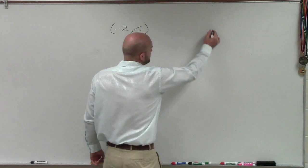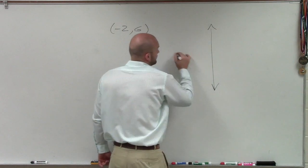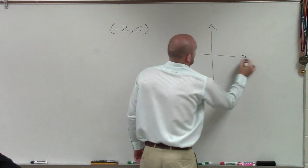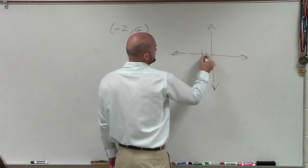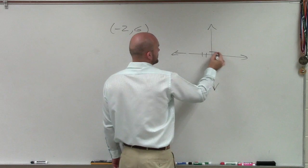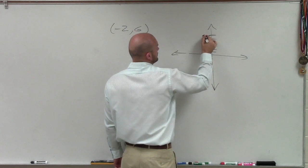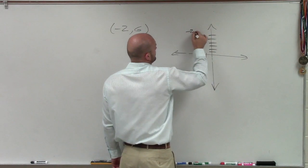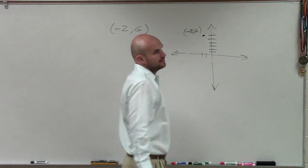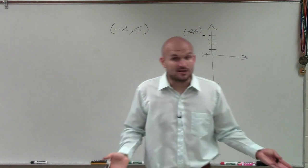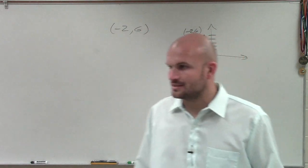So let's go and plot this point. Negative 2, up 6: 1, 2, 3, 4, 5, 6. So we don't have an angle, but we just have a random point.